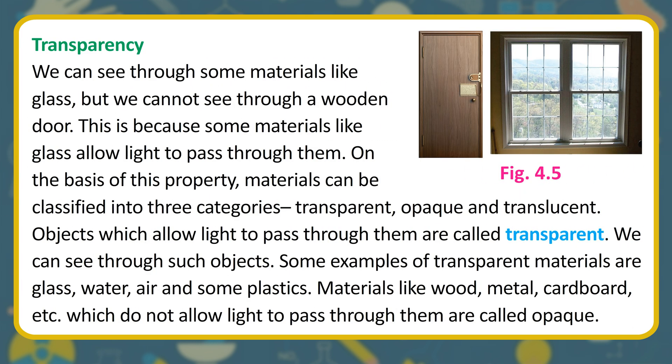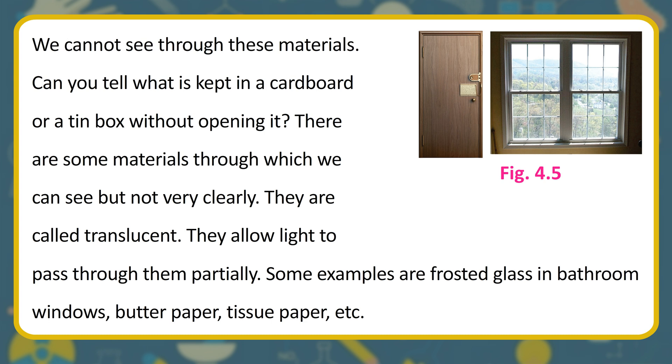Transparency: we can see through some materials like glass, but we cannot see through a wooden door. Some materials like glass allow light to pass through them. On the basis of this property, materials can be classified into three categories: transparent, opaque, and translucent. Objects which allow light to pass through them are called transparent — examples include glass, water, air, and some plastics. Materials like wood, metal, and cardboard, which do not allow light to pass through them, are called opaque.